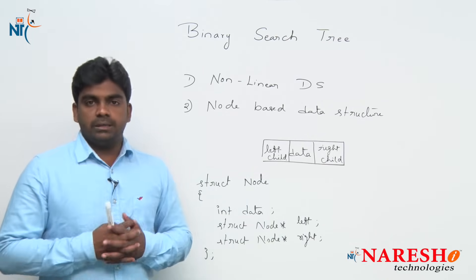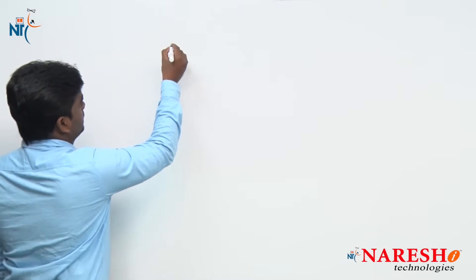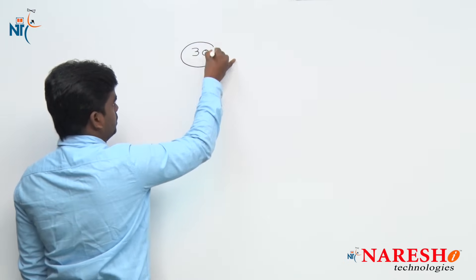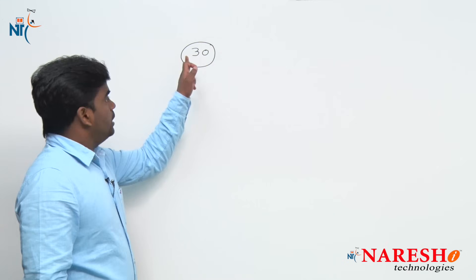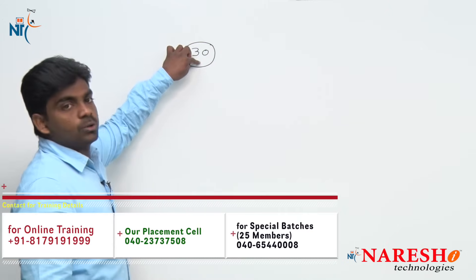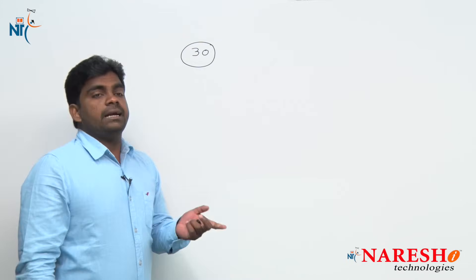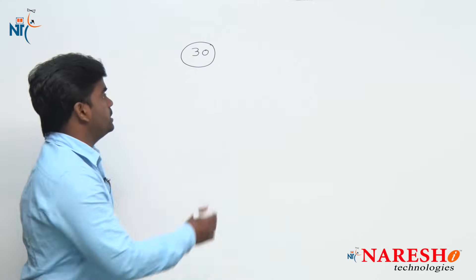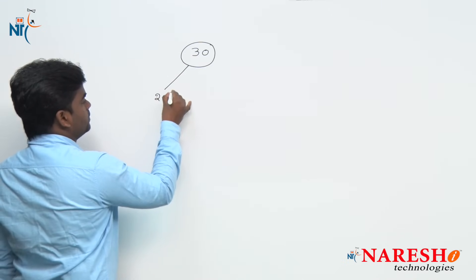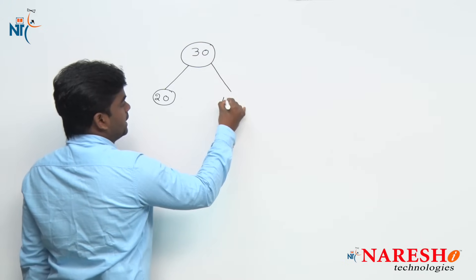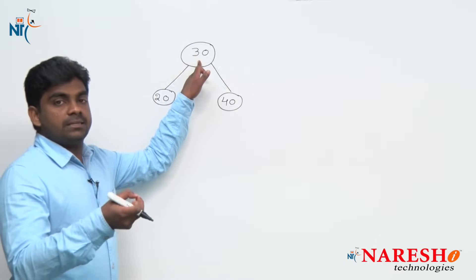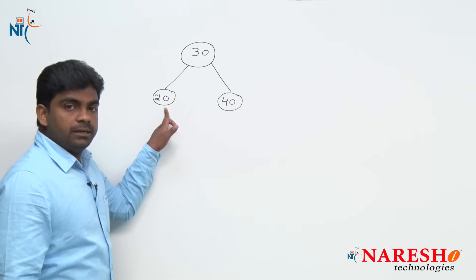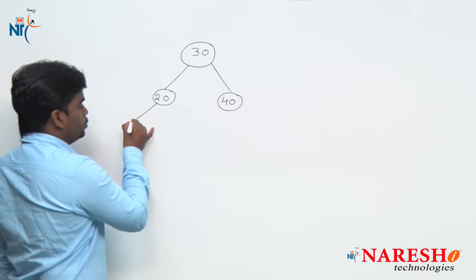How will the tree structure look? For example, 30 is one node. Suppose if you want to connect a value of 20 — 20 is connected to the left side, because 20 is lesser when comparing with the existing node. If the newly connected node value is greater than the root value, it is connected to the right side; if it is a lesser value, it is connected to the left side. So 40 is connected to the right. If you want to connect 10, first it compares with 30 — 10 is lesser than 30, so move to the left side — then compare with 20 — 10 is lesser than 20, so it is connected to the left side.